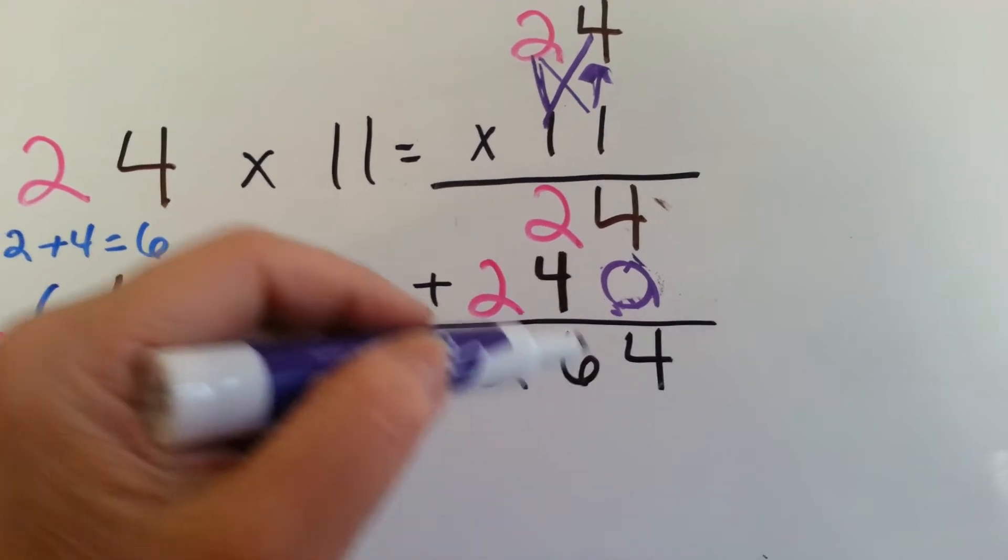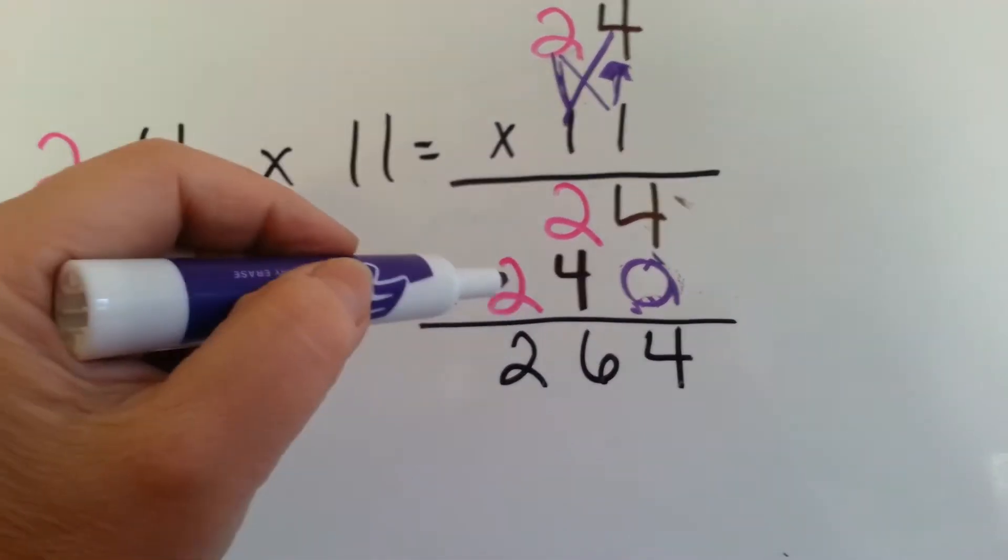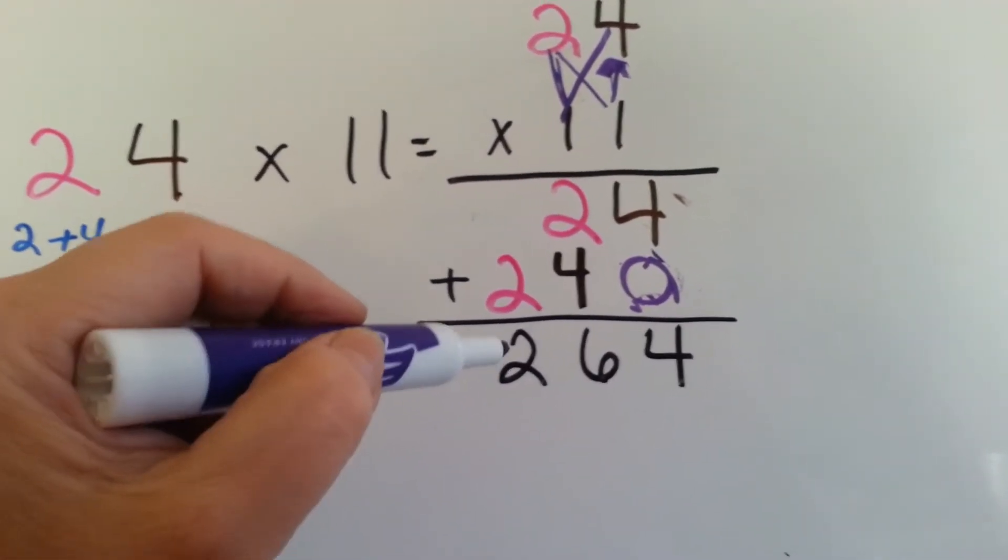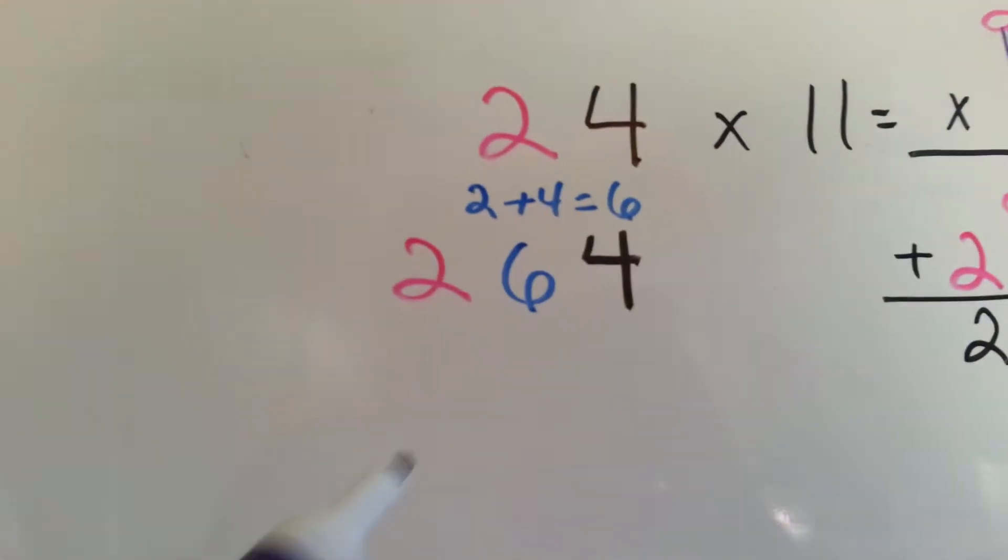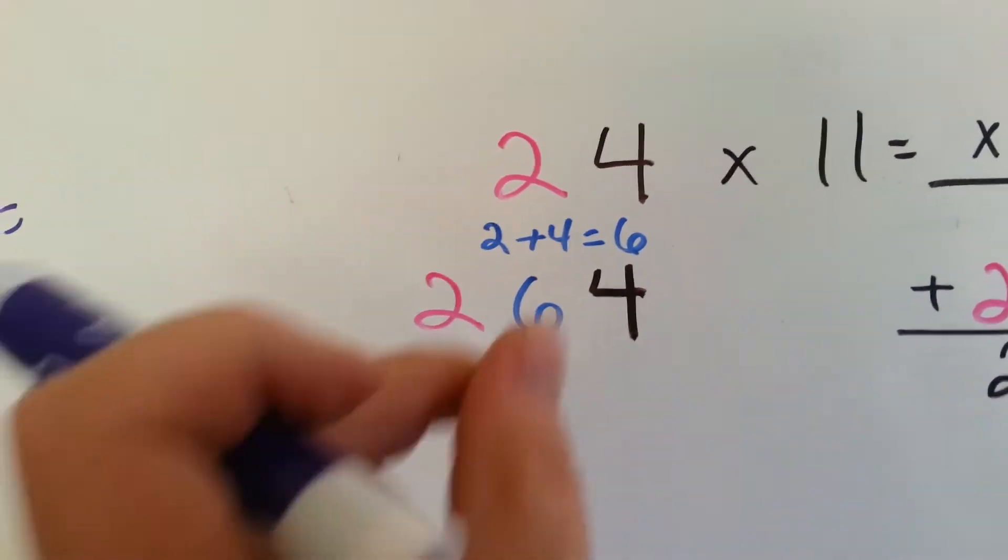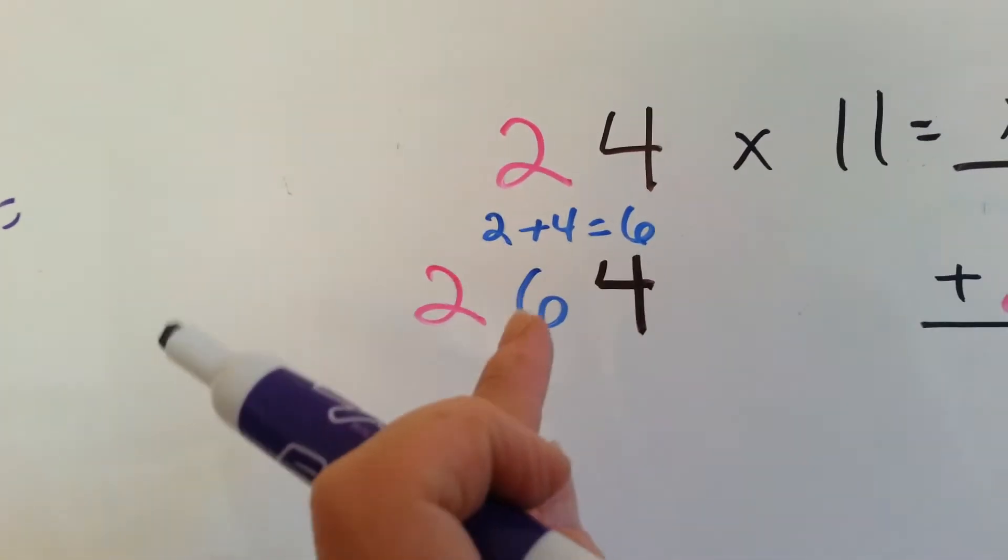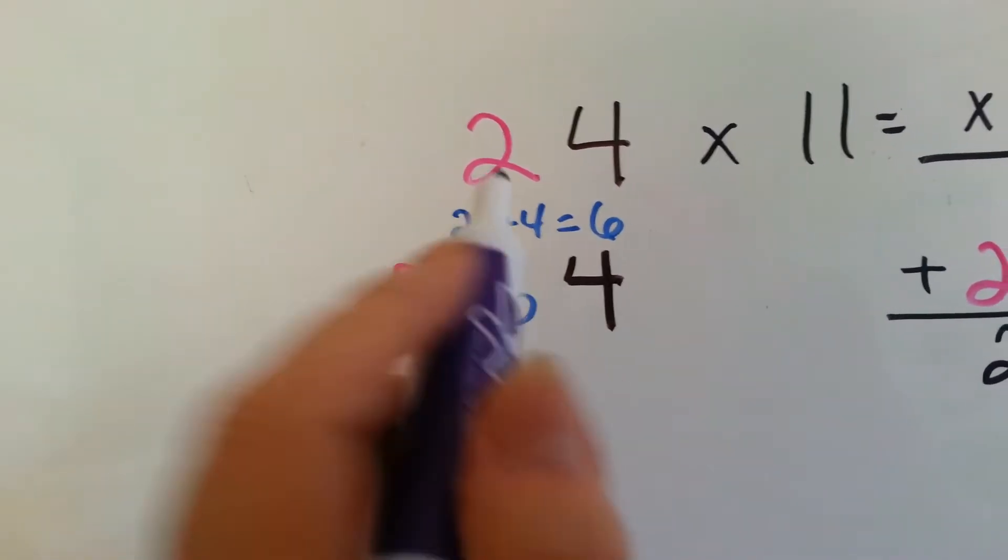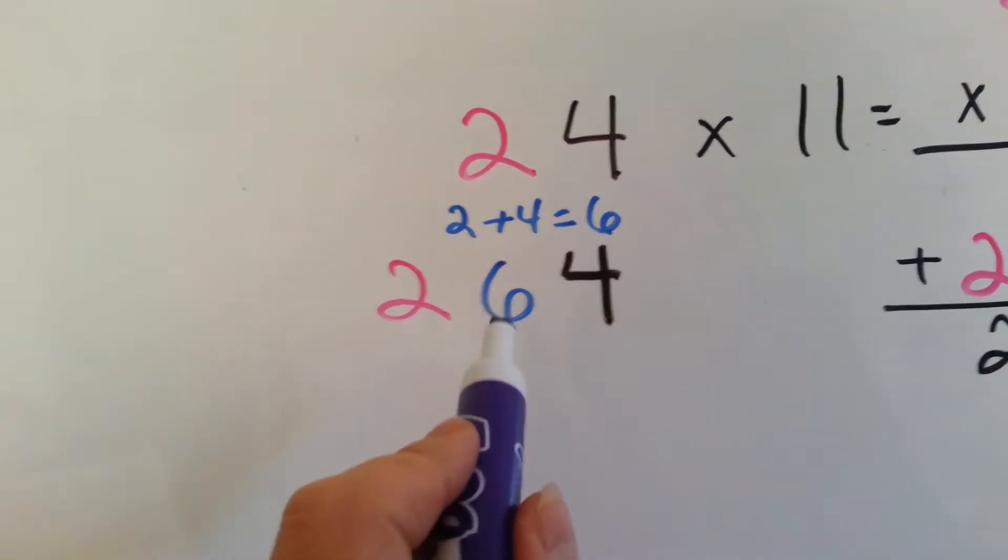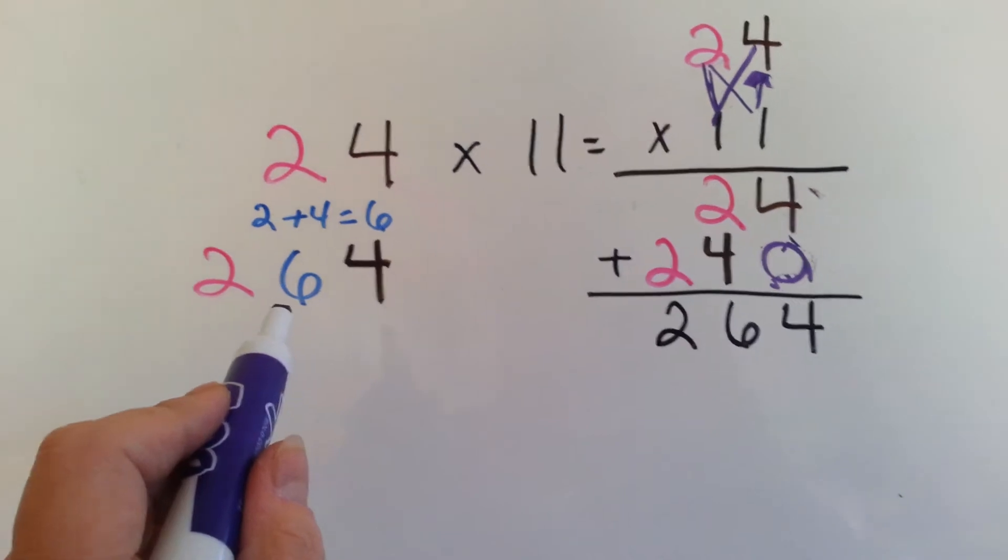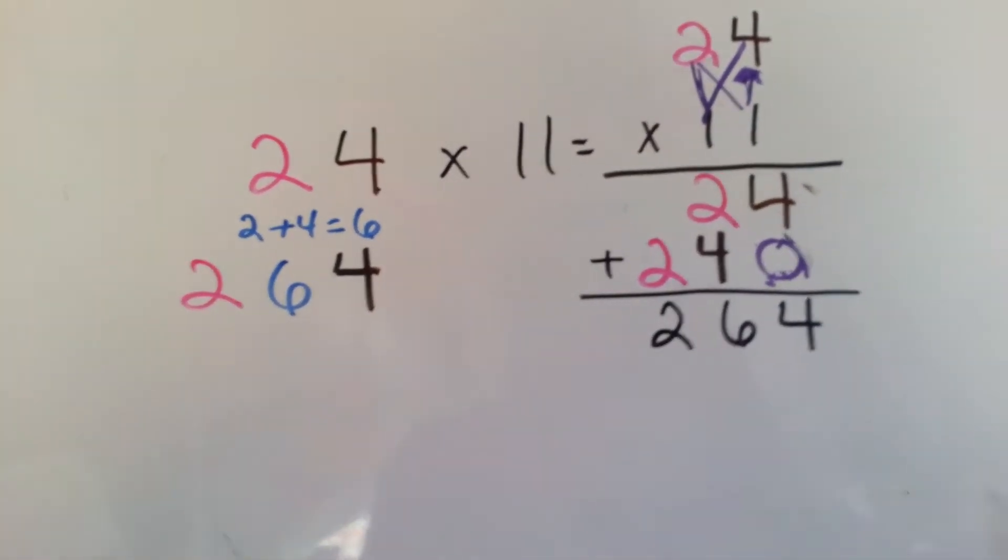4 plus 0 is 4, 2 plus 4 is 6, and 2 drops down, and our answer is 264. But let me show you a trick. You have your 2 and your 4, and you open them up so there's an empty space in the middle. And you add the 2 and the 4. 2 plus 4 is 6, and you put that 6 in the center space. Look, 264, 264.